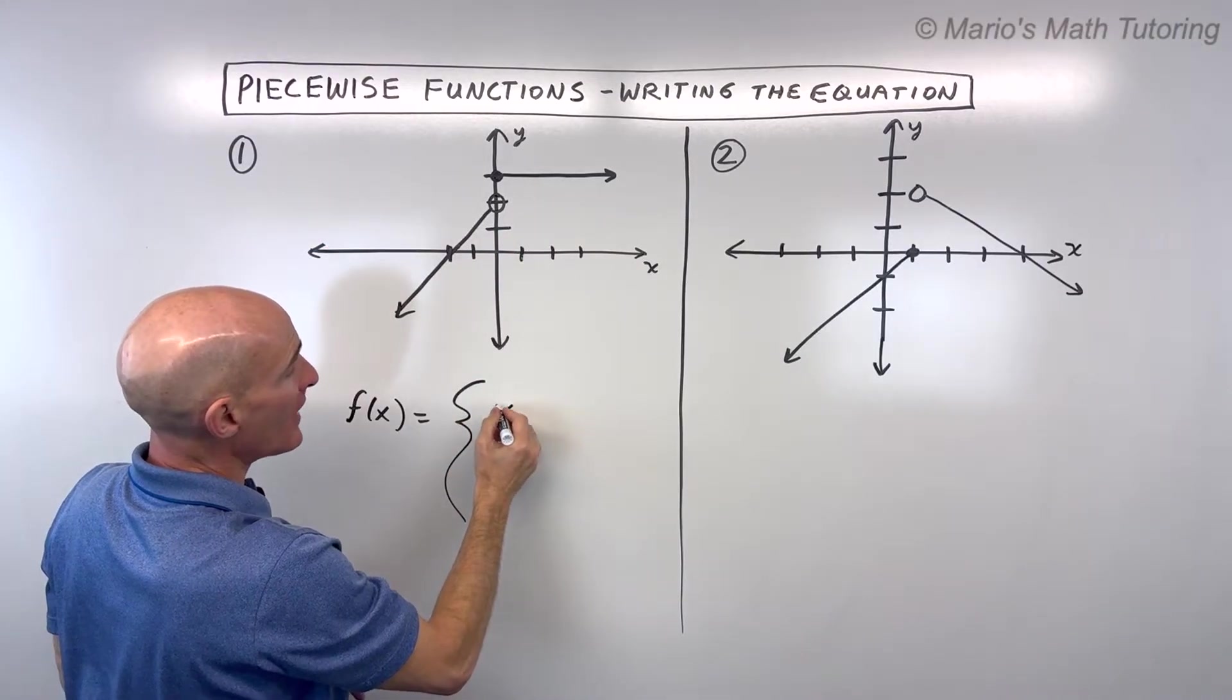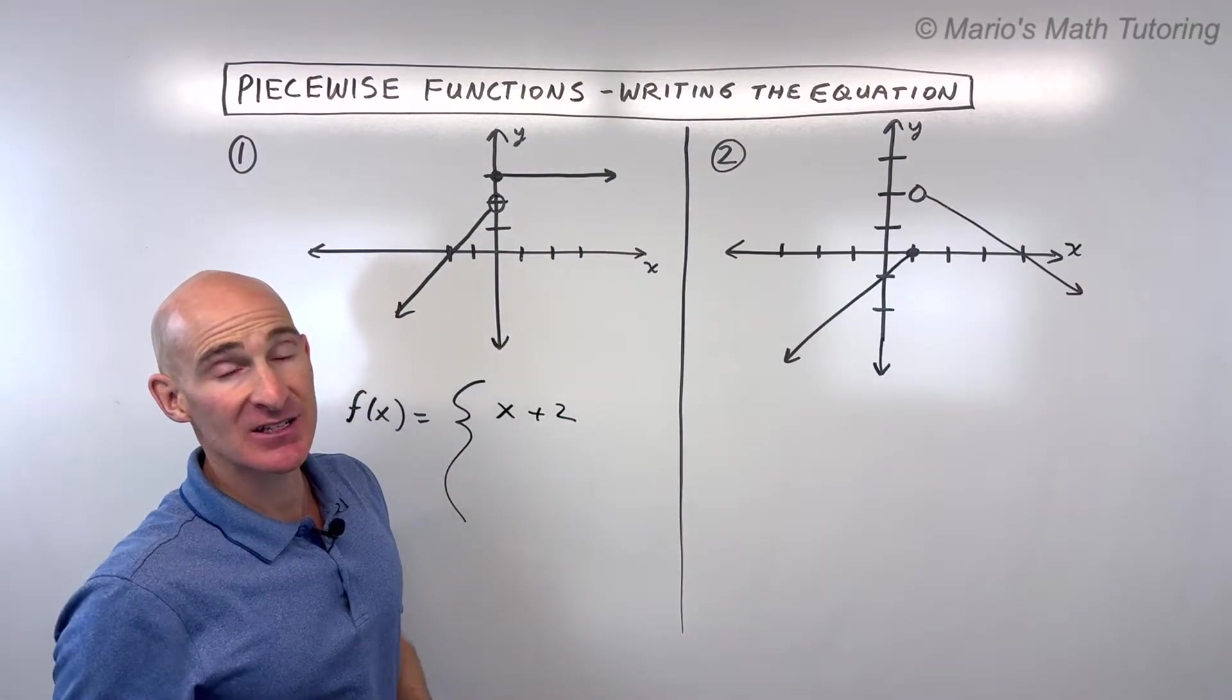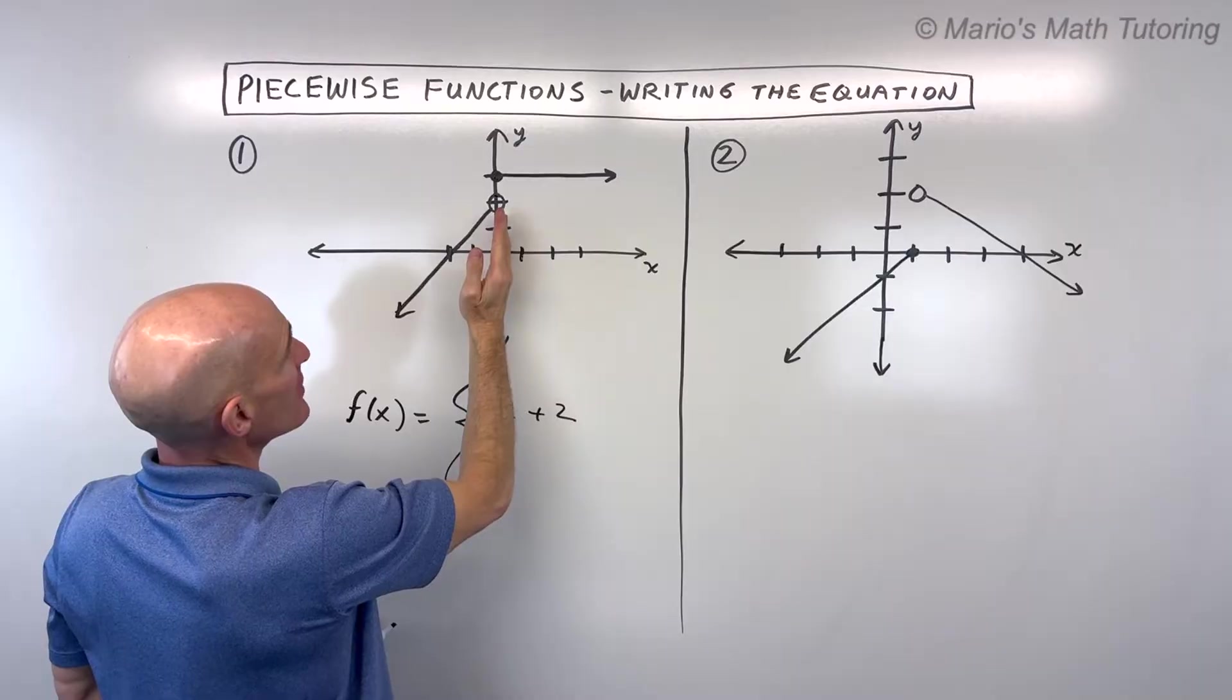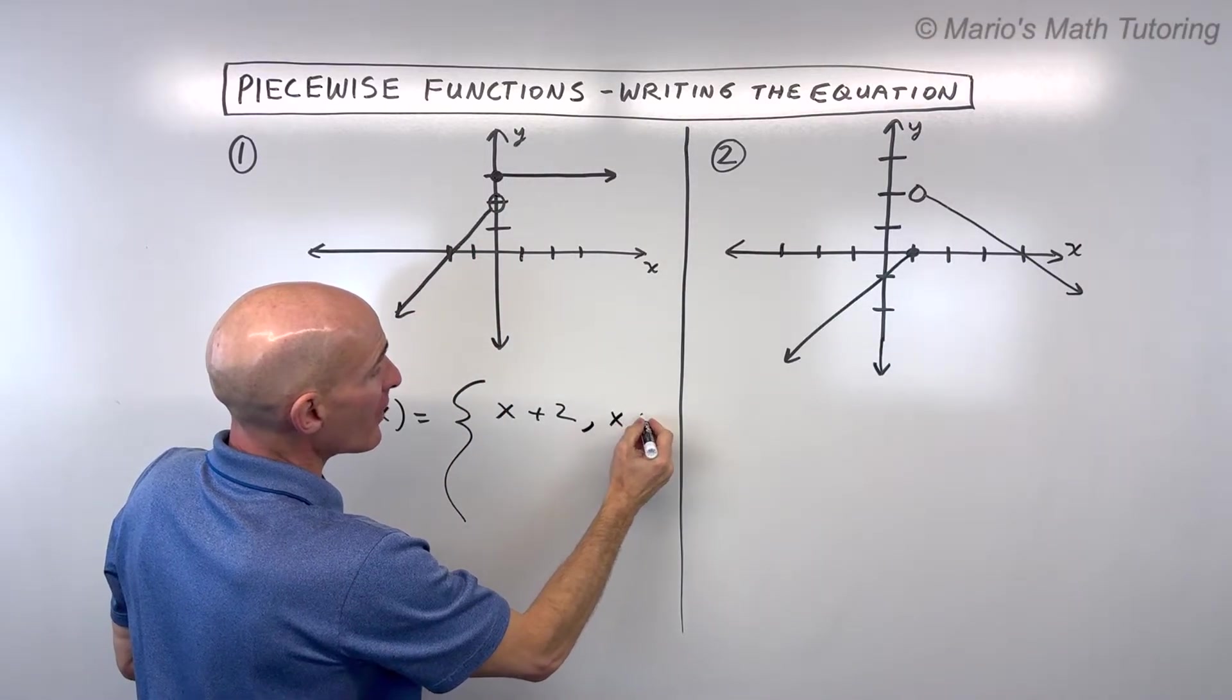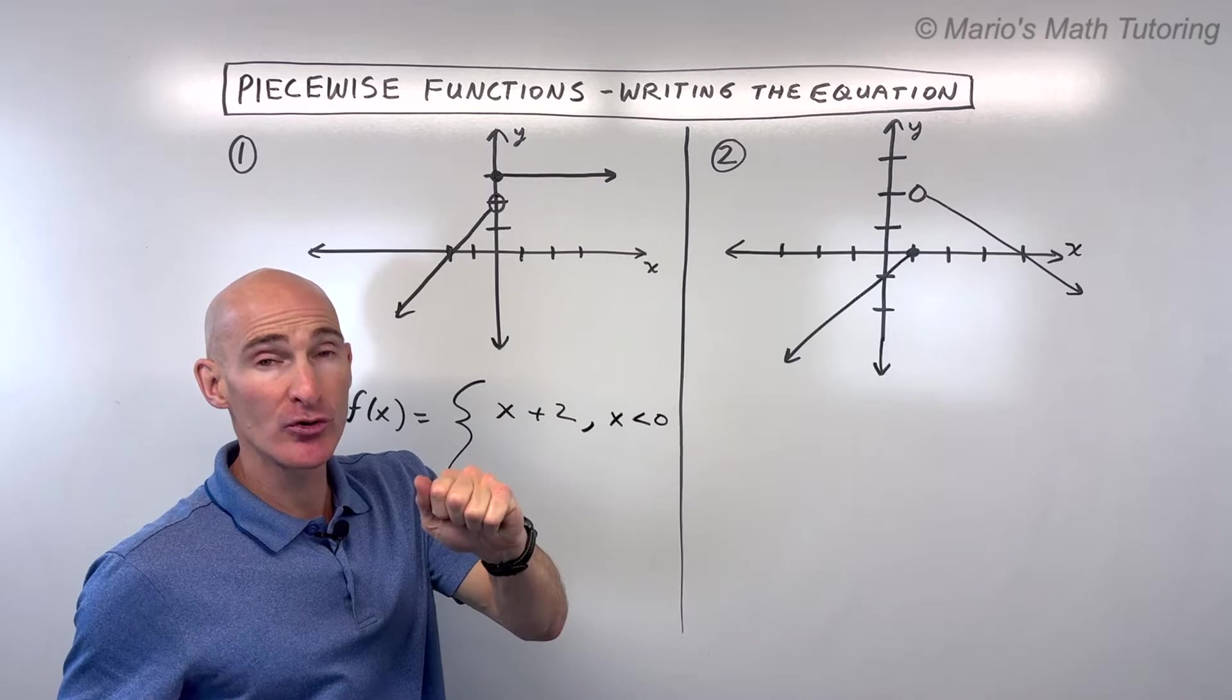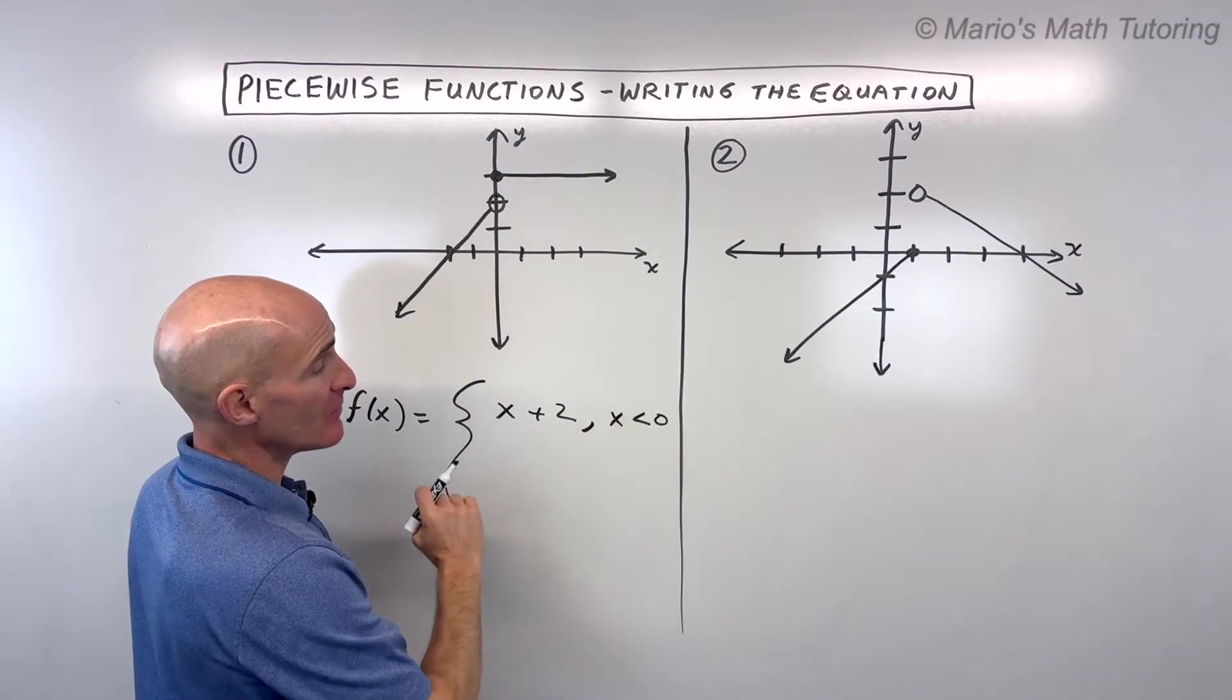But that represents a line that's continuous. This line is not continuous - it's only when the x values are to the left of the origin or the left of zero. So to say that, we're going to say where x is less than but not equal to zero. If it was equal to zero, this would be a closed circle meaning it would include that point. This is hollow, meaning it's open or it doesn't include that point, and that's why we're saying less than but not equal to.